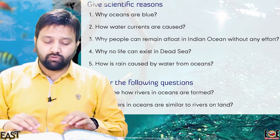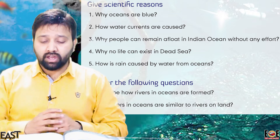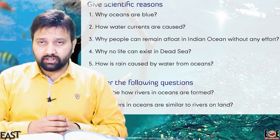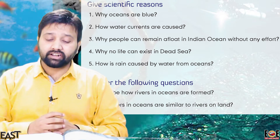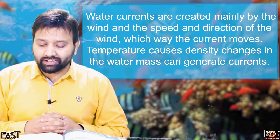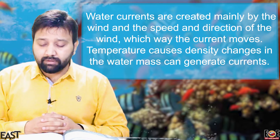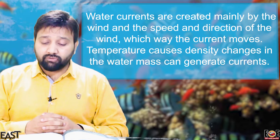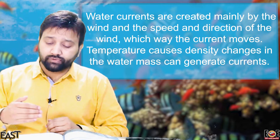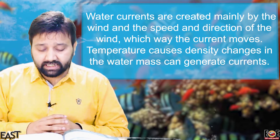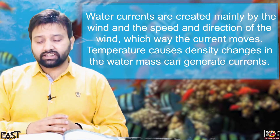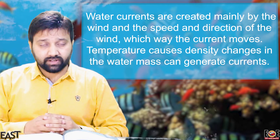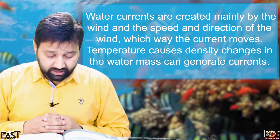Question number two: How are water currents caused? Water currents are created mainly by the wind — the speed and direction of the wind determines which way the current moves. Temperature causes changes in the density of water, and differences in water mass can also generate currents.